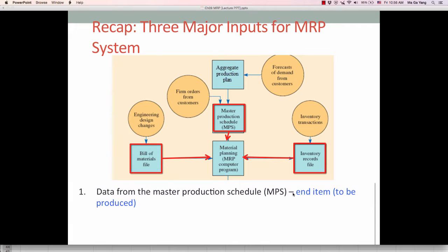This is all about end item information. How much end item need to be produced. The gross requirement for end item information usually comes from customer direct order or forecast of demand from customers. Based on these two major sources, we can gather MPS information. So that data for end item should be entered into MRP system.